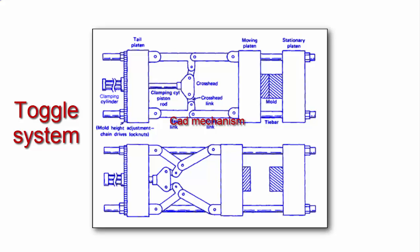There are two major systems: the direct pressure system and the toggle system. This is the system using a mechanical device called the toggle link.